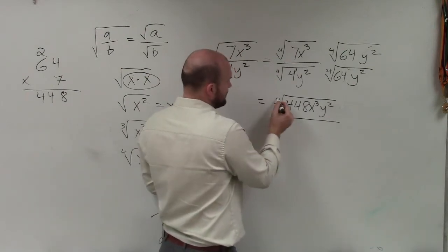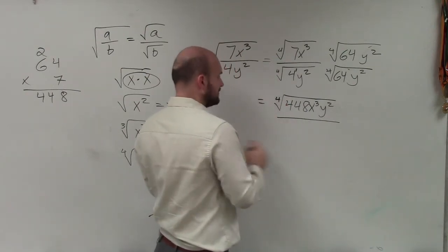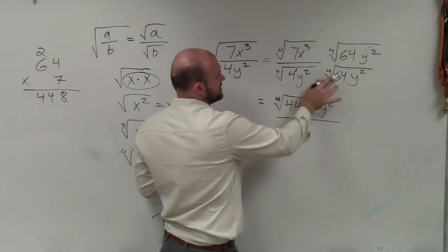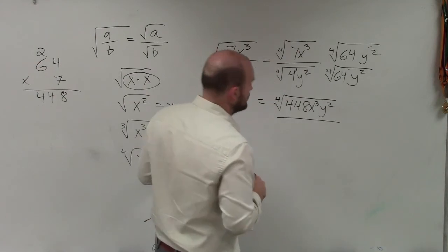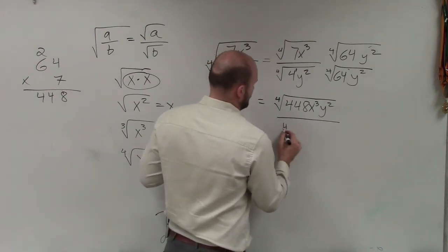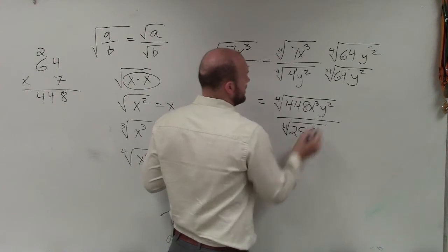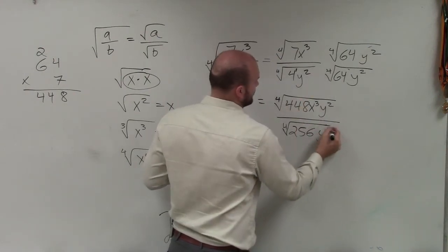I'm going to double check on 448, though, in just a second. Then I'm going to divide by 4 times 64 is going to be the fourth root of 128, which would be 256. So the fourth root of 256. And then y to the fourth. OK?